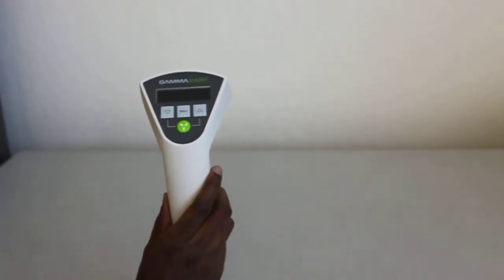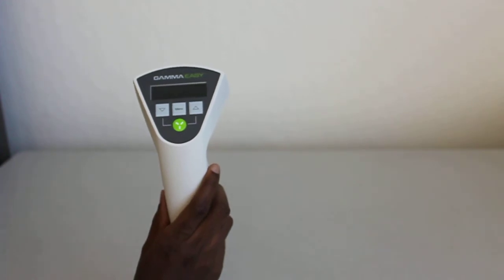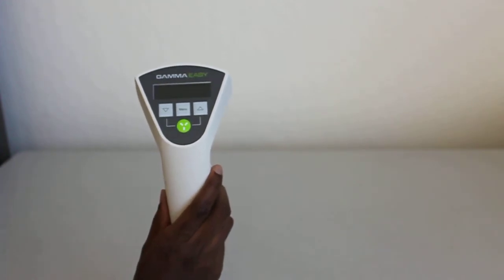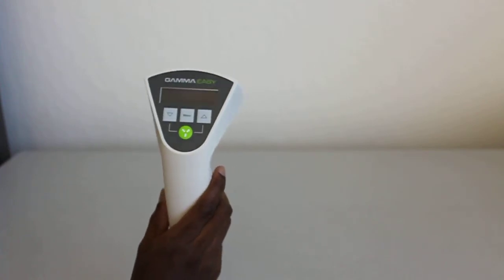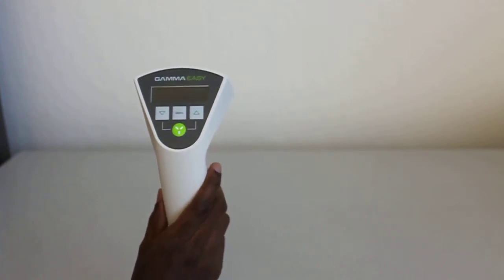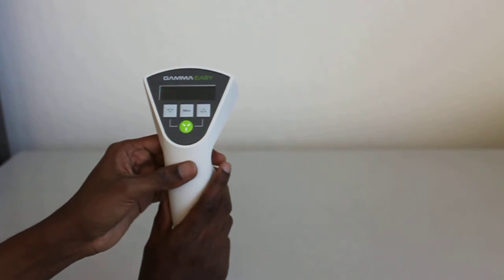Hi and welcome to videos by gammagacounter.com. In this video we'll be going through the basic functions for the Gamma Easy radiation detector. It is the basic general-purpose survey meter built by Gamma Scout, a very reputable company in Germany that makes Geiger counters.